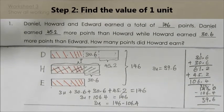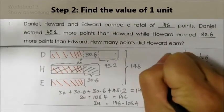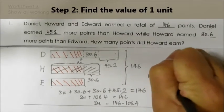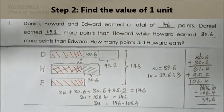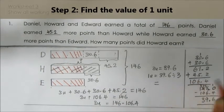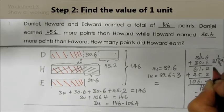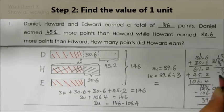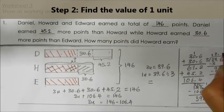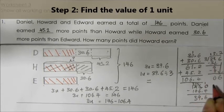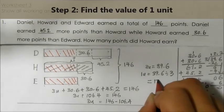So three units represent 39.6 points. I need to find one unit, so 39.6 divided by 3 allows me to find one unit. Doing the working — placing the decimal point — gives me 13.2.